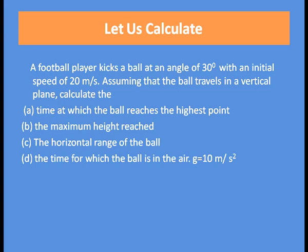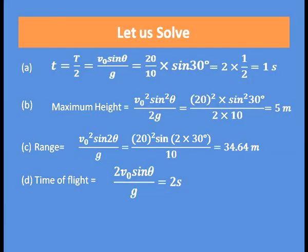The time required to reach the maximum height is t = V0 sin θ / g = T/2. With V0 = 20 m/s, g = 10 m/s², and θ = 30°, the equation becomes t = (20/10) × sin 30° = 1 second. So the time required to reach maximum height is 1 second.